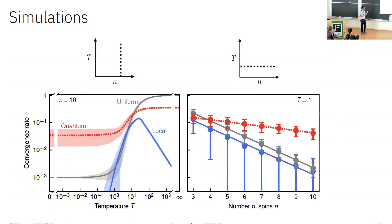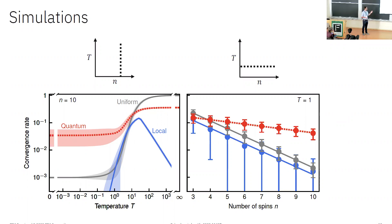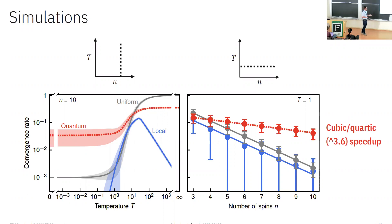For comparison, our quantum algorithm — shown by red lines in our numerics — still shows a slowdown in convergence rate as we enter this spin-glass regime, but not nearly as pronounced as these classical algorithms. It is still exponentially slow within this regime, but fitting this data as well as other similar numerical data suggests a speedup that is polynomial — roughly between cubic and quartic.